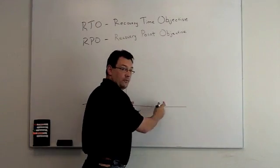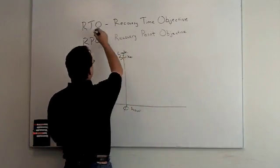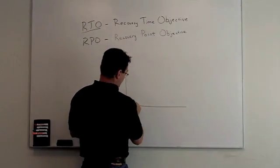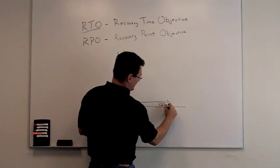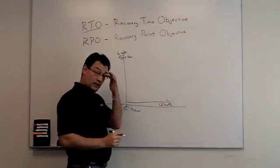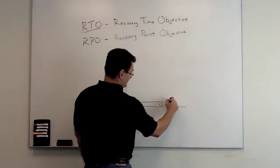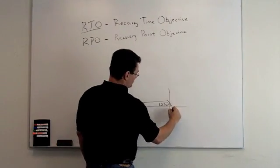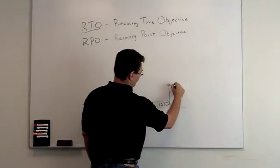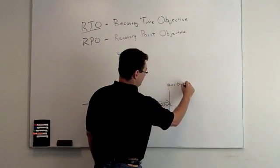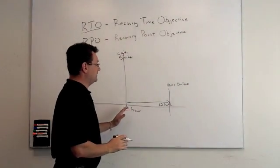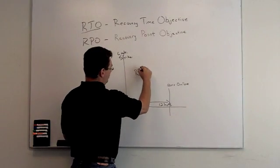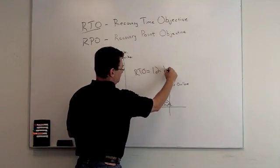So as time moves forward from the event, that is a measure of recovery time objective. Let's say that in your DR plan you can recover your data in 12 hours. So if it takes you 12 hours for users to be back online and connected to the data that was lost in the event, then your RTO for your DR plan is 12 hours.